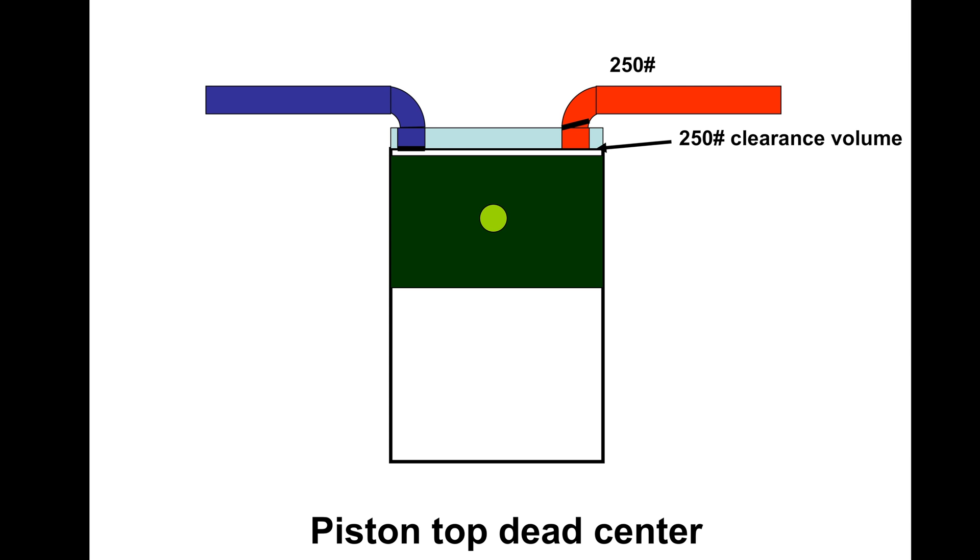If I had this to where it went to zero clearance volume, when something heated up the piston would hit the head and damage it. So we have to have a little bit of clearance volume. We want this as small as possible to get the most efficiency.